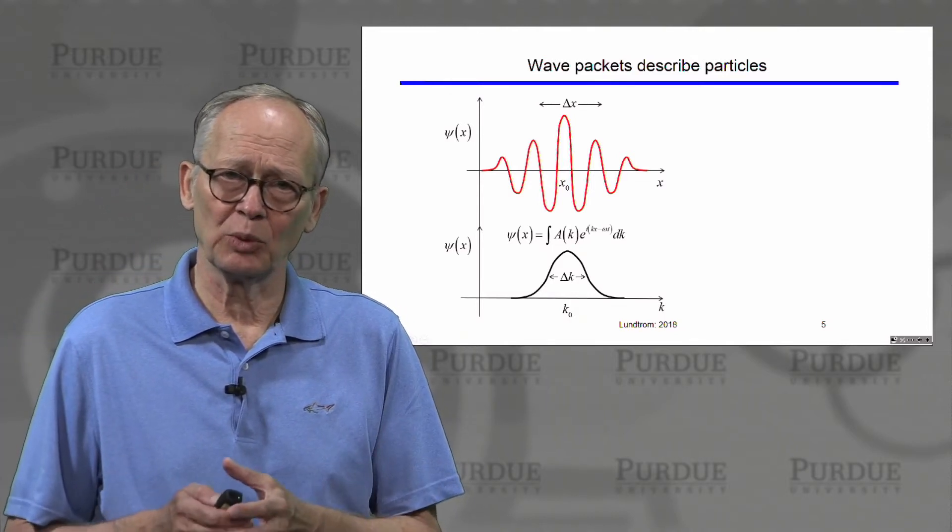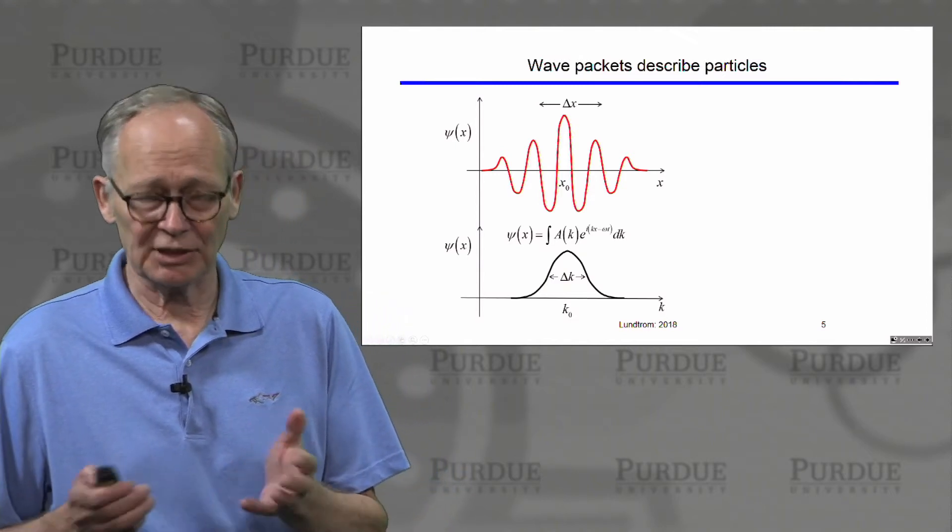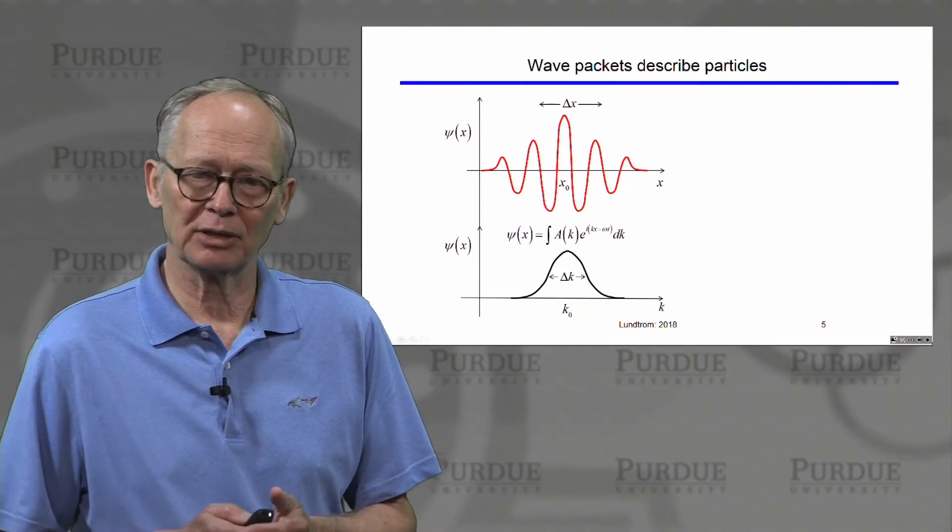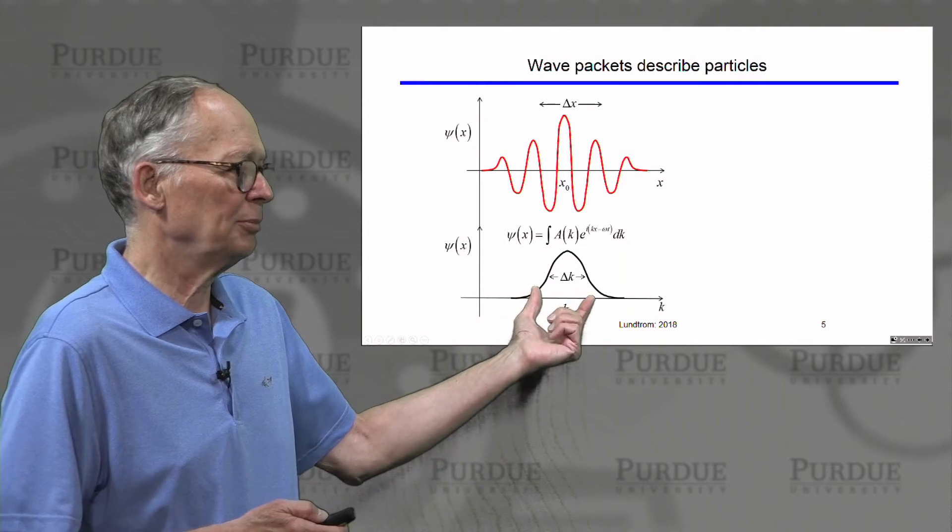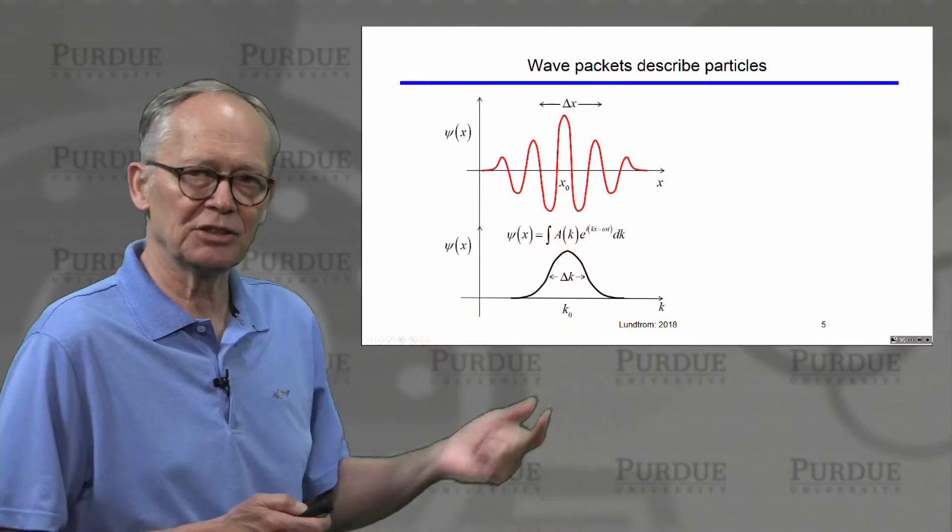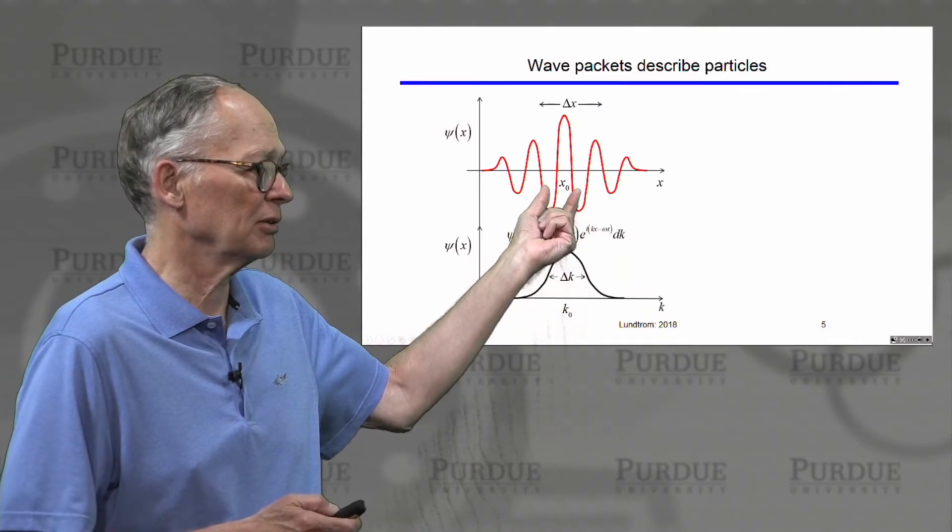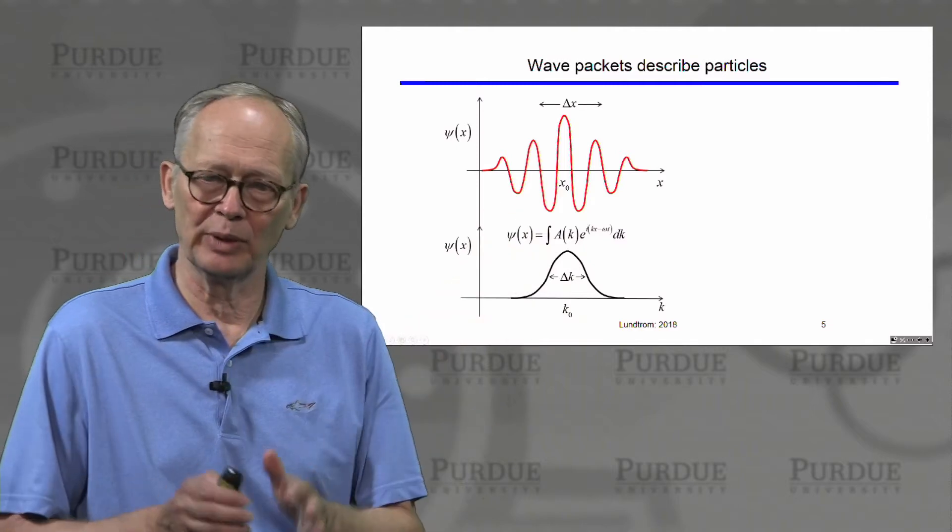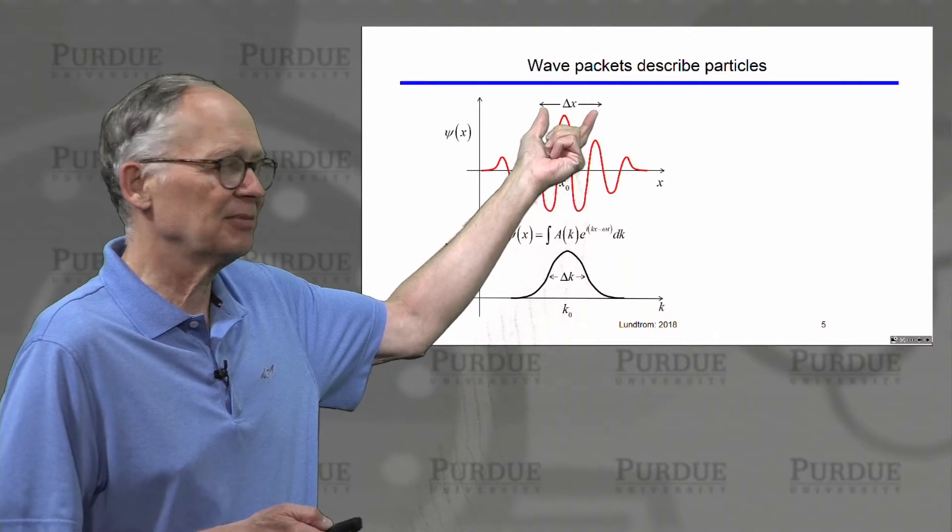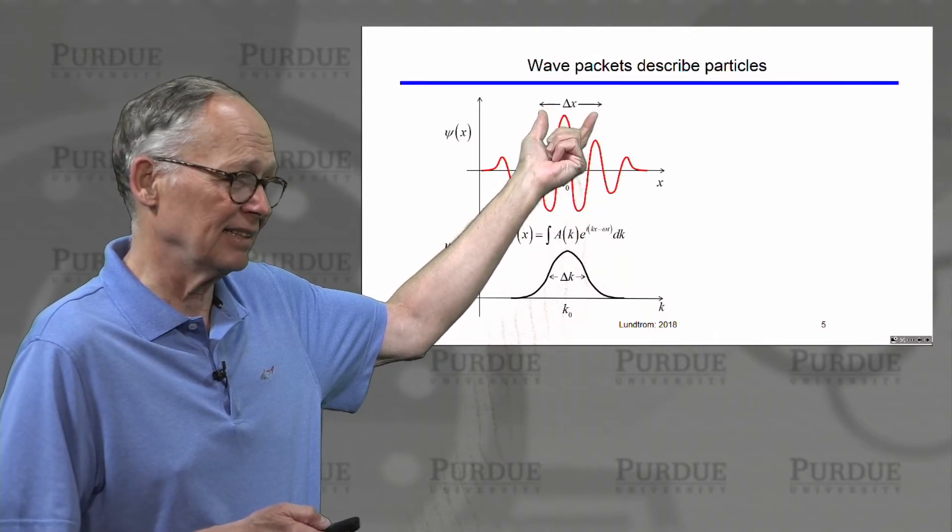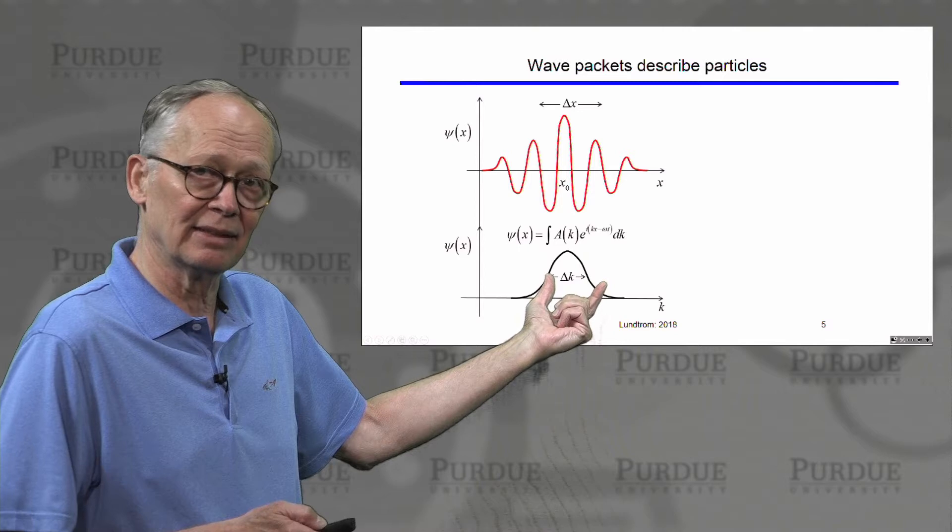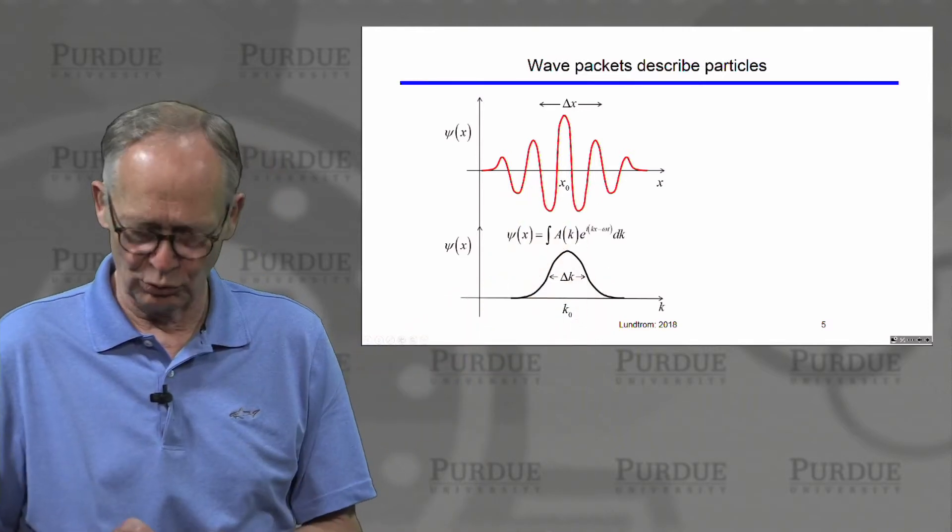Now electrons are waves, and a wave is distributed everywhere in space. But electrons are also particles, so they have a location in space. To describe electron particles, we make wave packets. We add up waves with different values of k such that they interfere constructively at one particular location where the particle is located, and destructively as we move away so that we localize the electron to some region of space. There is some precise uncertainty in its exact location. And there's some uncertainty in its crystal momentum because it took a spread of k vectors in order to accomplish this localization.